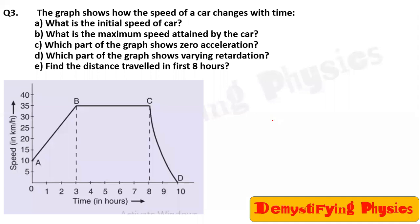Let us continue with the questions on speed-time graphs. Question number three: the graph shows how the speed of a car changes with time. What is the initial speed of the car? Observe the graph — at time zero, the speed is 10 kilometers per hour. So this is the initial speed. What is the maximum speed attained by the car?